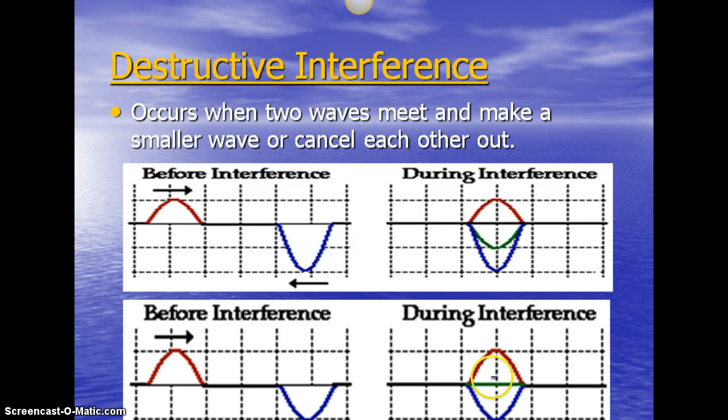In this one, the crest and the trough were exactly the same and so they cancel each other out and the wave is gone at that point.